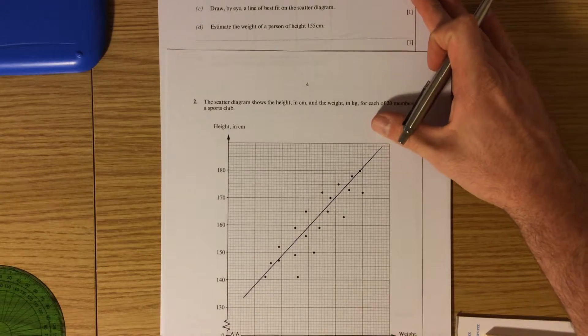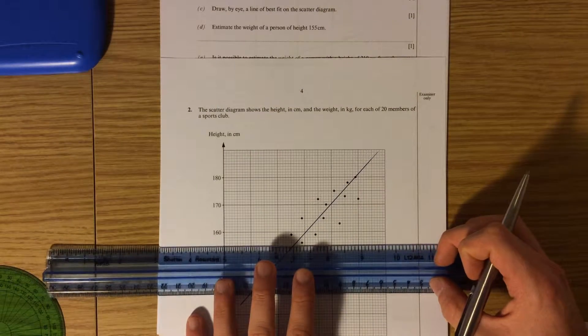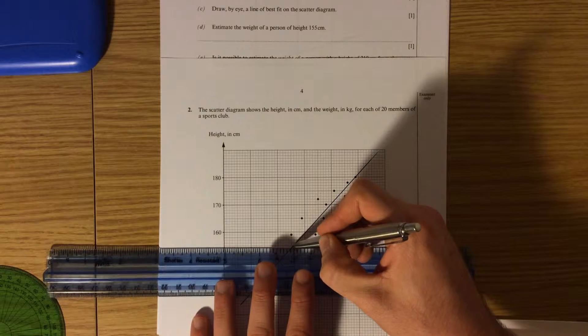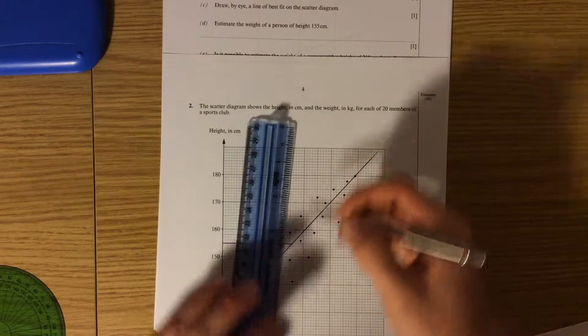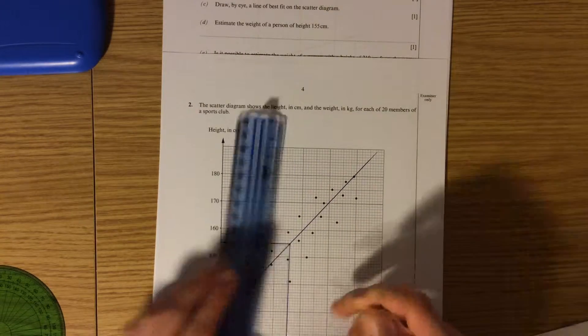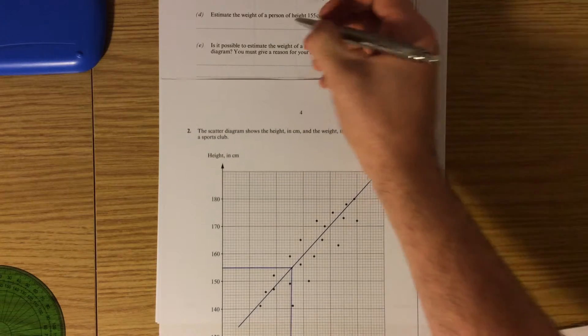Estimate the weight of a person of height 155 centimeters. So using our line of best fit we're going to draw a line across at 155 centimeters. And we are going to work out the weight that that person would have. From the graph we can see that that is 65 kilograms.